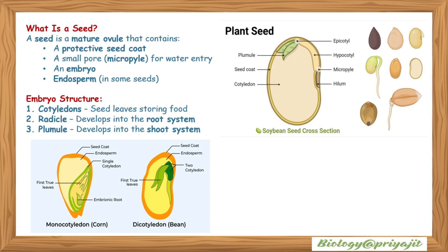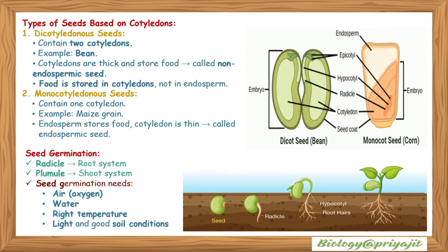What is a seed? A seed is a mature ovule that contains a protective seed coat, a small pore or micropyle for water entry, an embryo, and endosperm found in some seeds. Embryo structure: it has cotyledons — seed leaves storing food; radicle — which develops into the root system; and plumule — which develops into the stem or shoot system. Based on cotyledons, dicot seeds contain two cotyledons — example: bean.